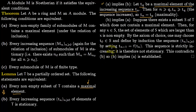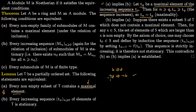For B implies A we use the contrapositive: we show not-A implies not-B, which is a contradiction with B. Suppose there exists a subset S of T which does not contain a maximal element. Then for any x in S, the set of elements of S larger than x is non-empty — because if it were empty, x would be a maximal element.